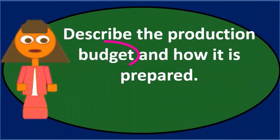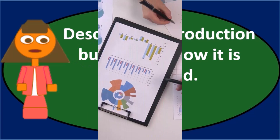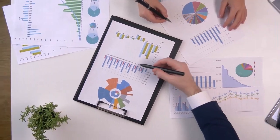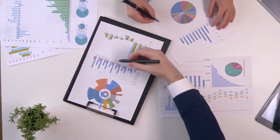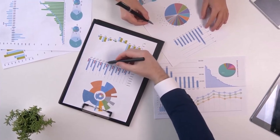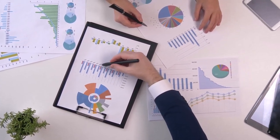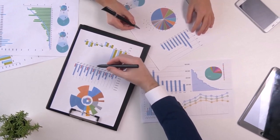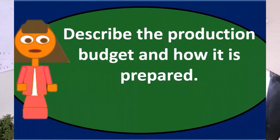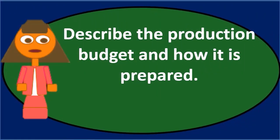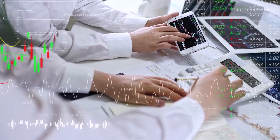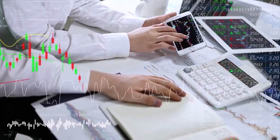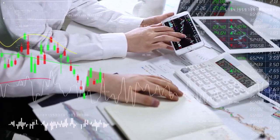The budgeting process will typically follow some type of order. We're often starting with the sales budget, ending with the budgeted financial statements — the budgeted income statement, the budgeted balance sheet — and the production budget falls within this process.